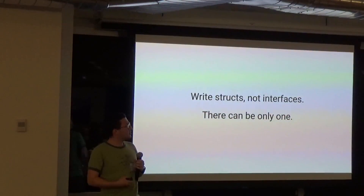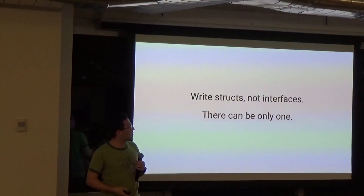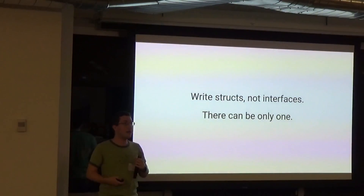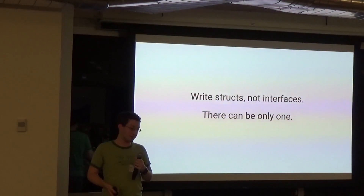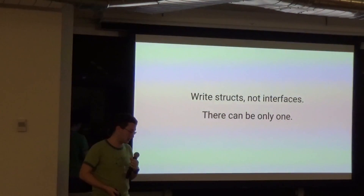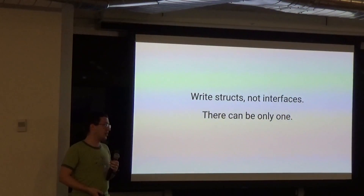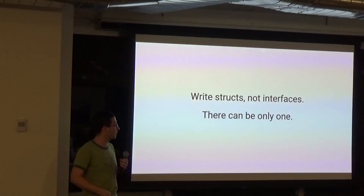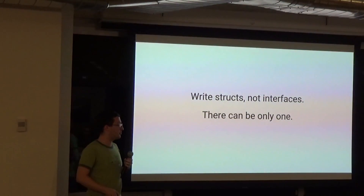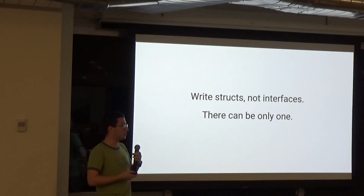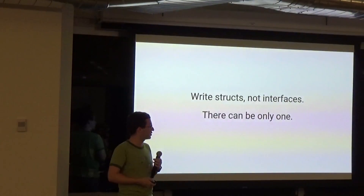One other tendency I've seen — especially from newer Go programmers — is: 'I miss inheritance, I'm going to write things as interfaces instead of structs.' It's harder to get an interface right than a struct, and much harder to know how people are going to use an interface. If you write a struct, it's easier to know there's only one version of this and you can control it.